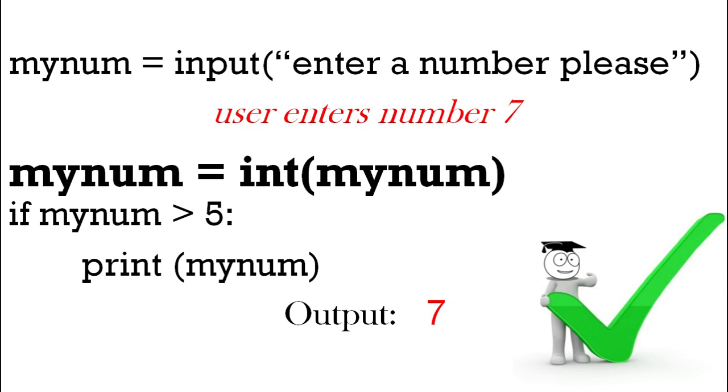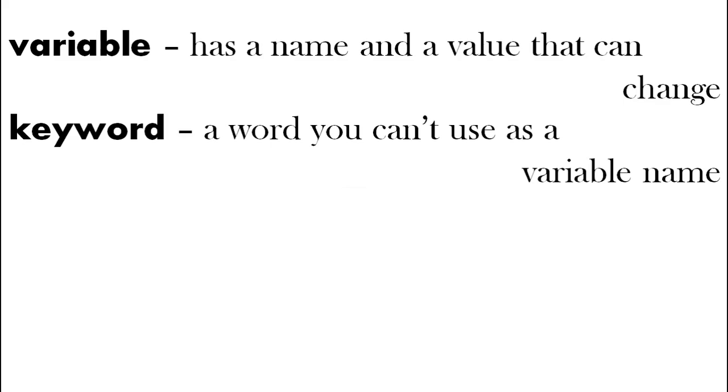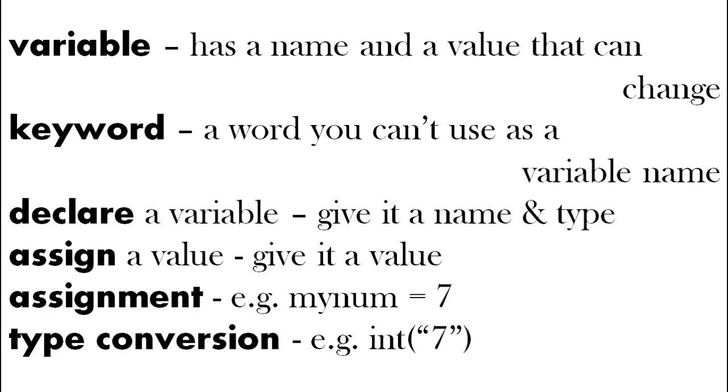We'll finish with some terms. So we've got variable has a name and a value. The value can change. Keywords in Python, we don't want to use them as variable names. You can say what a variable is, if it's an integer or string, that's declaring a variable. And when you give it a value is called assigning a value. So that's an assignment. So mynum equals seven is assigning the value seven to the variable mynum. And when you want to change the type that's called type conversion.